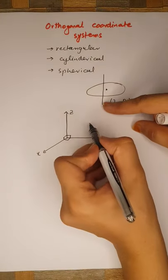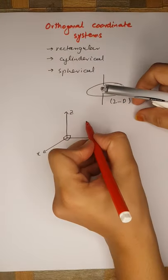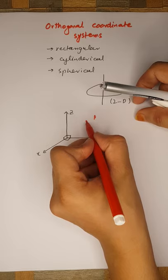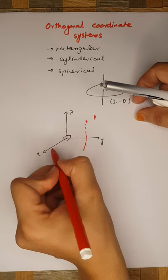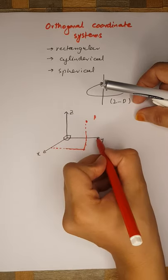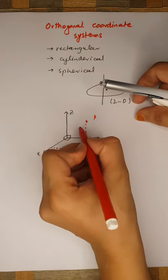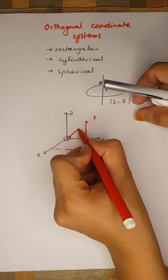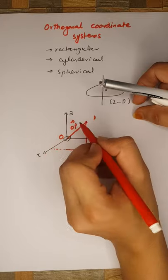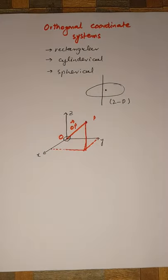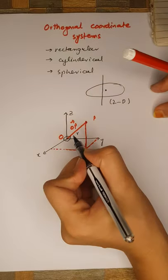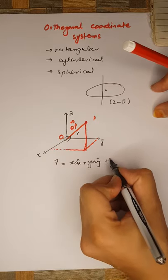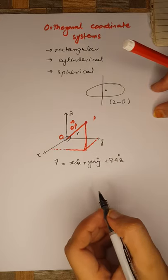If you want to represent a particular point in the rectangular coordinate system, this point will have a certain projection in the plane formed by x and y, and then a specific height represented by the length along z. When you join this point P with the origin, you get the position vector OP. We also represent this position vector as vector r, which is equal to x·âx + y·ây + z·âz, where x, y, z are the scalar projections of vector r.